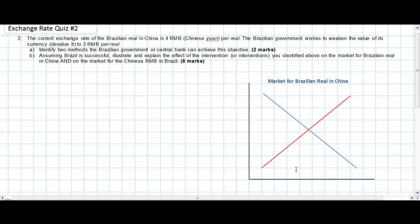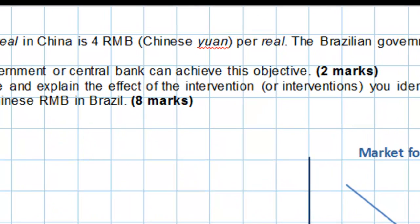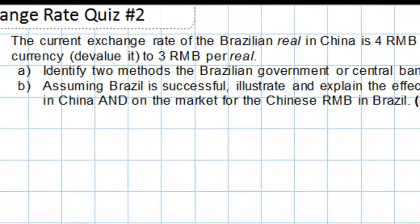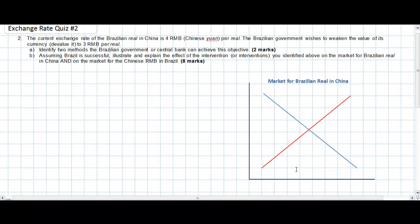The question is: the current exchange rate of the Brazilian real in China is 4 RMB per real. The Brazilian government wishes to weaken the value of its currency — in other words, devalue it — to 3 RMB per real. Part A asks to identify two methods the Brazilian government or the central bank can use to achieve this objective of a weaker Brazilian real.